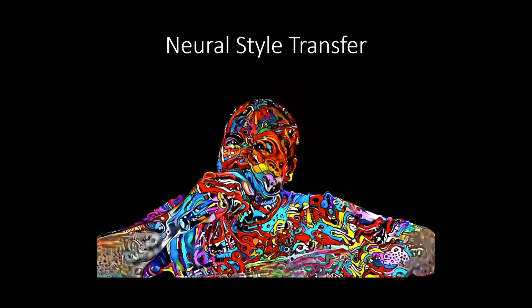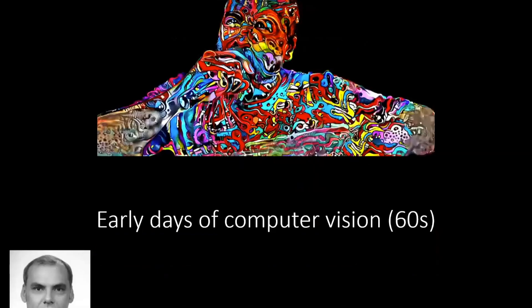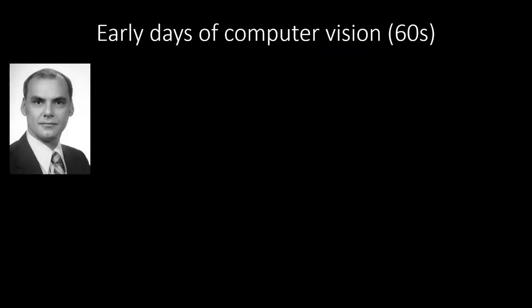Let me give you a time lapse of the computer vision field starting from the early 60s and going to today. It basically started in the 50s, but the early days are considered to be in the 60s because this guy on the left - you can see on the screen - is called Larry Roberts, and he's widely considered as the father of computer vision.